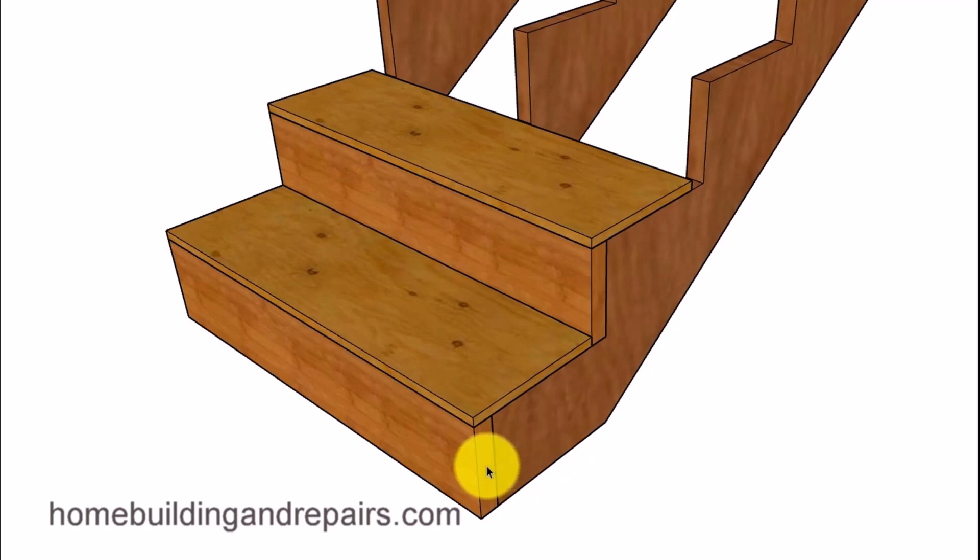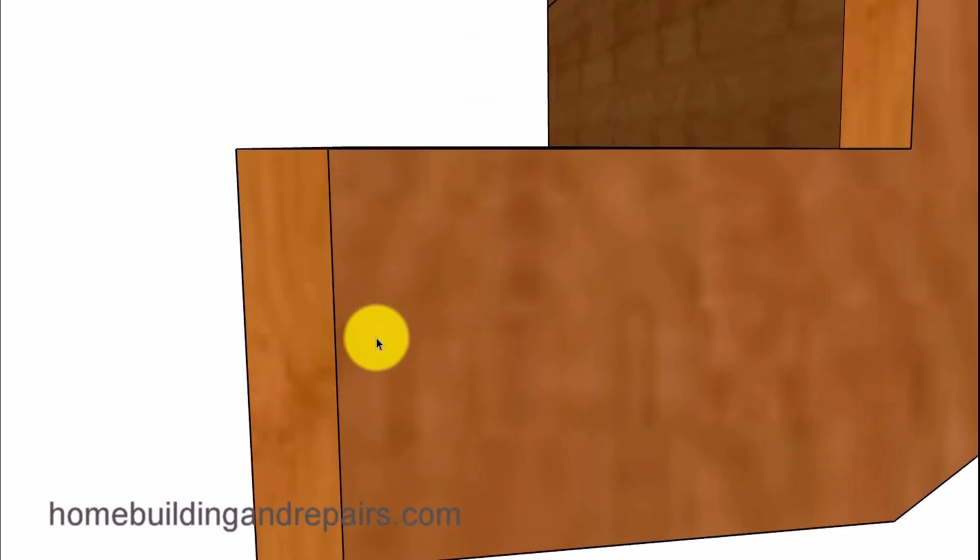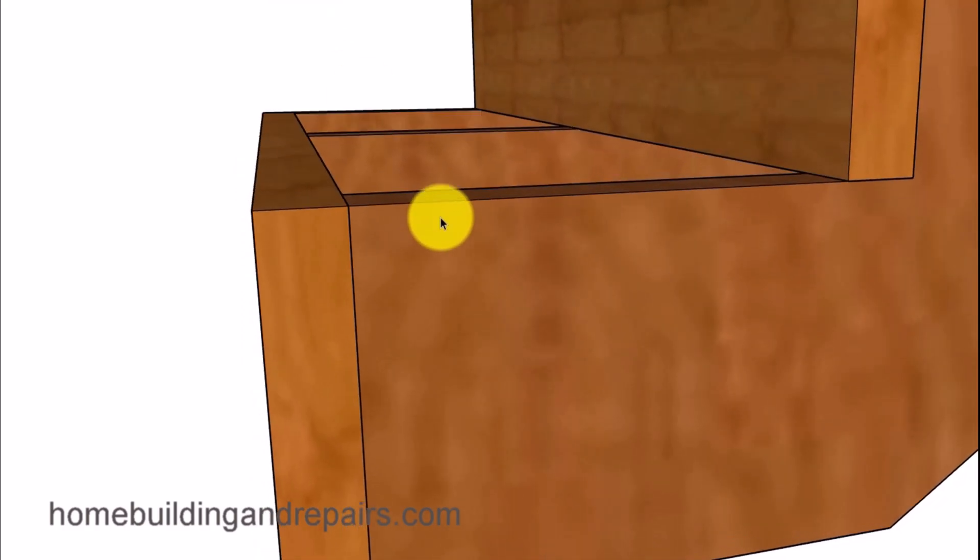So let's go ahead and put the two-by risers on here and three-quarter inch treads. Let's go ahead and remove them. Take a look at what it would look like there. Everything's nice and straight. Again, perfect. Great.